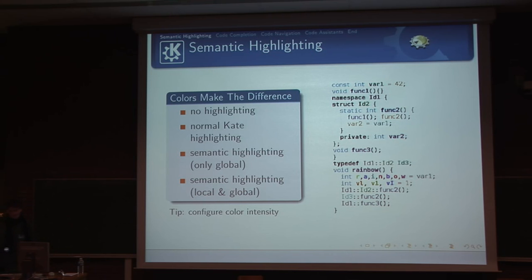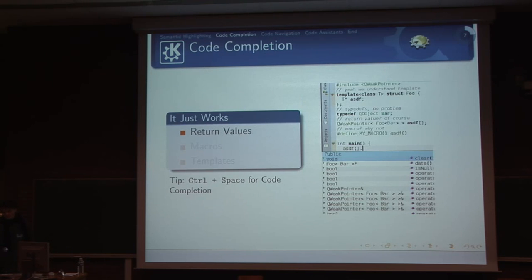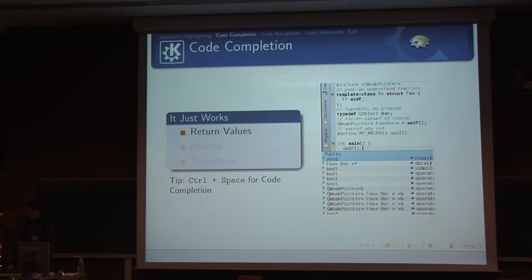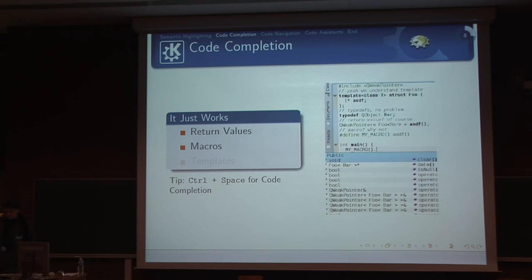You can configure all that to your liking. Code completion, of course, is very important as well, and we hope it just works. It does for most things — for example, calling a function that returns something QWeakPointer-ish, it parses the code, understands what is returned, and offers the correct code completion. You can also use macros — there are lots of frameworks that force you to use macros for many functions, and it works as well.